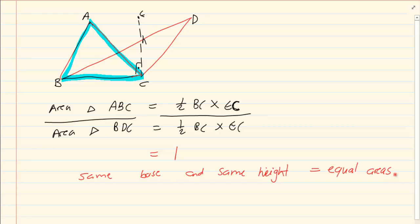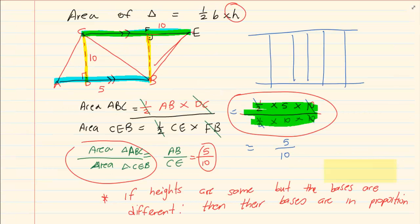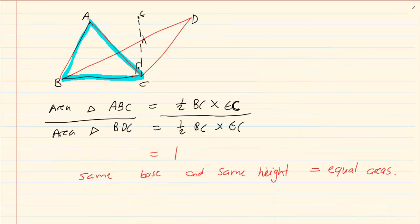These two examples regarding areas will become very handy when we are doing all the proofs for grade 12. So make sure you understand these rules. The first rule: if the heights are the same but the bases are different, then their bases are in proportion. The second rule: if they have the same base and the same height, then they have equal areas. Thank you for watching.